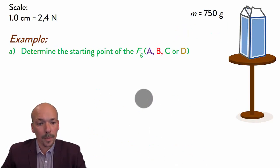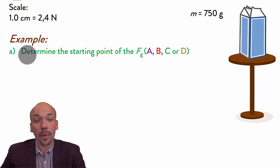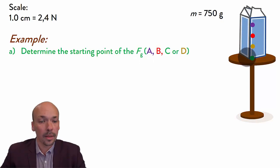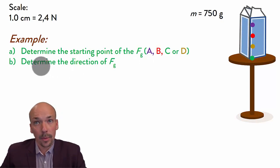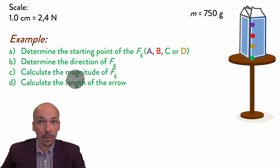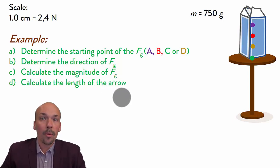Now we have an example question. We have a box on a table, and we know the mass is 750 grams. We have a scale and a few questions. First: determine the starting point of FG — the gravitational force — is it A, B, C, or D? Next, determine the direction of FG. Then calculate the magnitude. And calculate the length of the arrow. Once you've done that, you can draw the arrow. Try it for yourself — I will now give the answers.